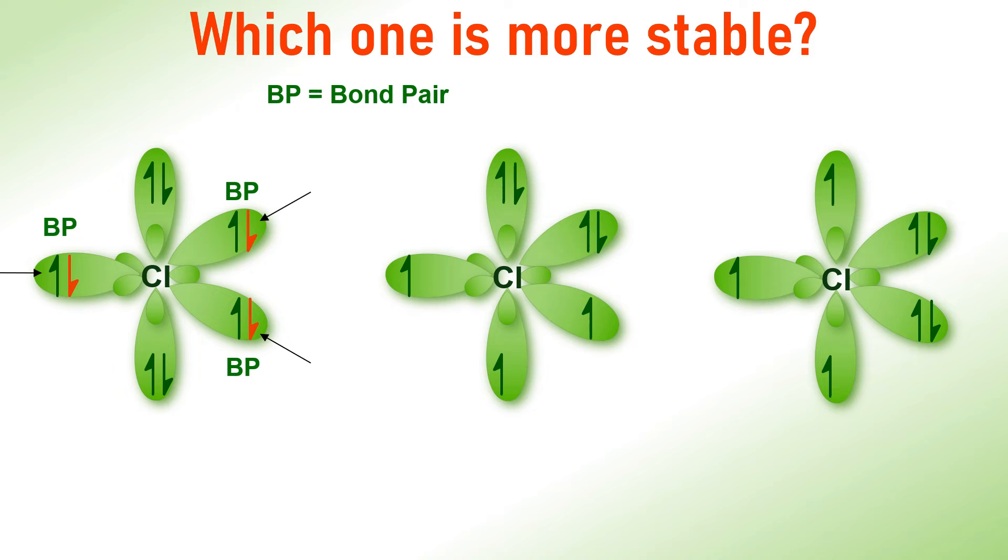The full filled orbitals are referred to as lone pairs, denoted as LP. Since the lone pairs of electrons are attracted by only one nucleus, their electron density spreads over more space when compared to that of bond pairs. The electron density of bond pairs is confined to a lesser volume as they are attracted by the two bonding nuclei.